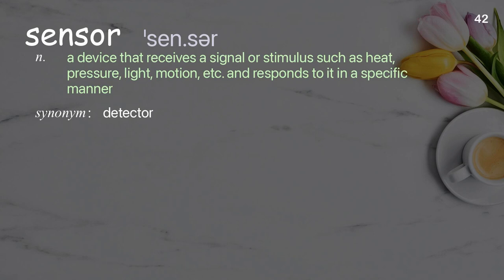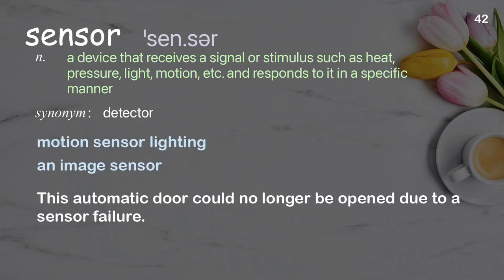Sensor: A device that receives a signal or stimulus such as heat, pressure, light, motion, etc. and responds to it in a specific manner. Examples: Motion sensor lighting, an image sensor. This automatic door could no longer be opened due to a sensor failure.